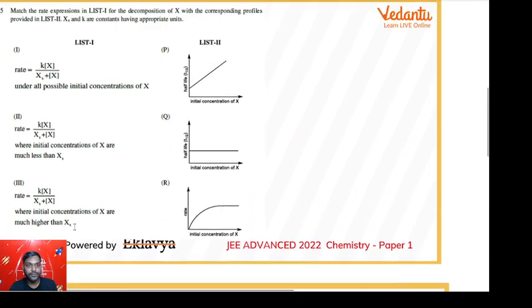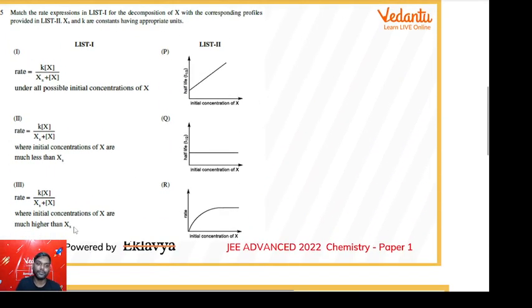Let us modify these rate law expressions with the help of given restrictions. In the first, they have not given any restriction so it is advisable to not use this because I won't be able to get any concrete answer. It is always advised to use those expressions where you can convert them into zero, first, or second order because we know their rate expressions and properties by heart.